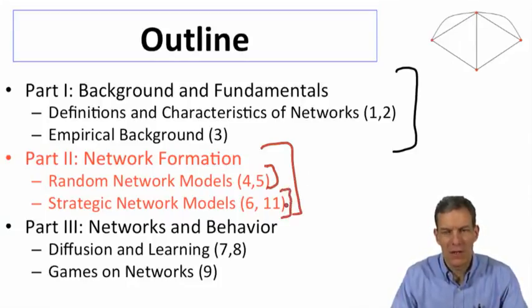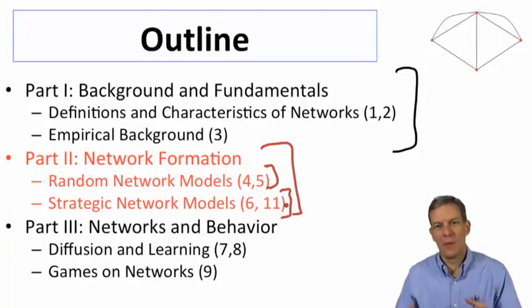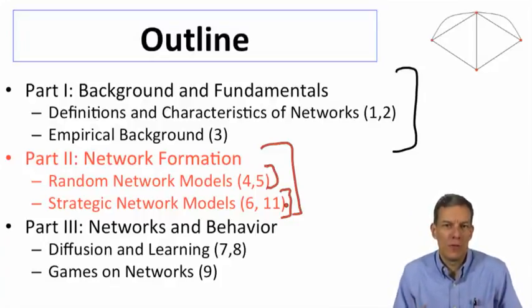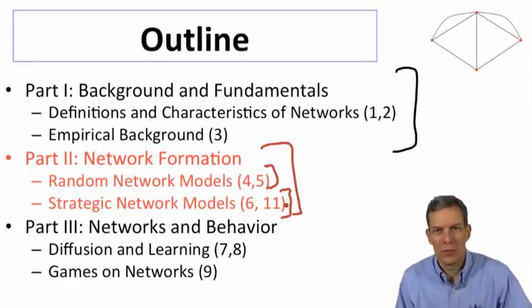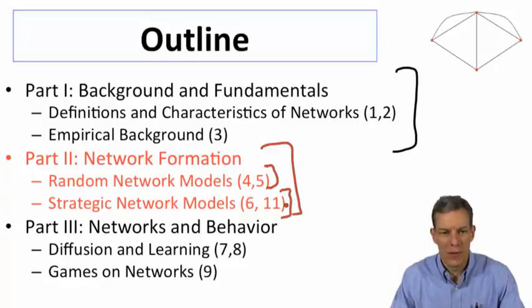And then the other will be strategic network models, where instead of things, links happening at random, what will happen is we'll have nodes actually choosing the links that they're going to form. And they'll choose them to benefit themselves. These will be game theoretic kinds of models of self-interested individuals forming relationships and seeing how that impacts network formation.